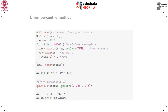Using quantile(theta, probs = c(0.025, 0.975)), we get the Efron percentile confidence interval: 40.87 to 43.44, compared to the Student's t interval of 40.85 to 43.51. The non-parametric bootstrap confidence interval is slightly tighter than the Student's t-based 95% confidence interval.